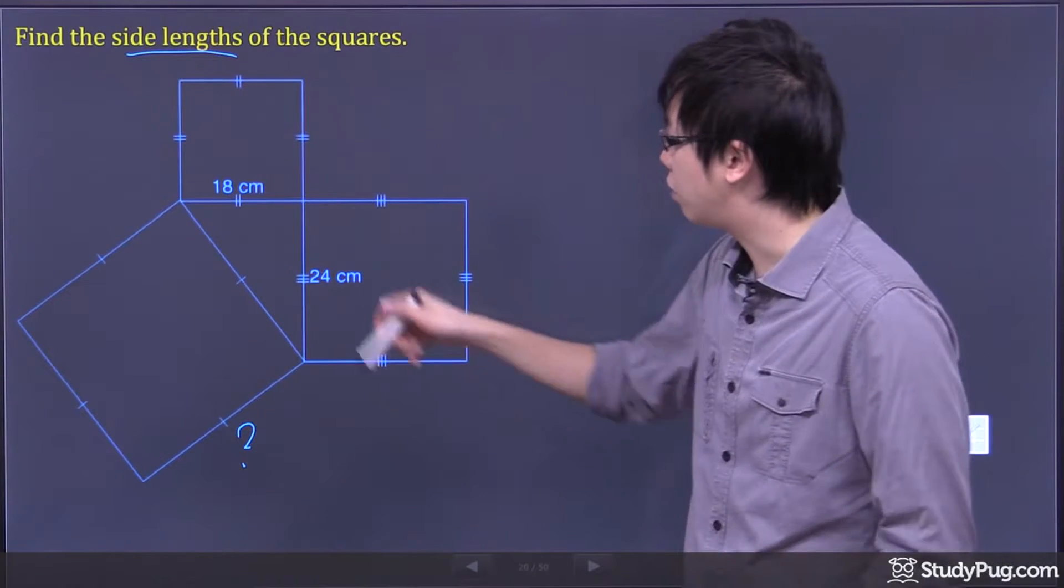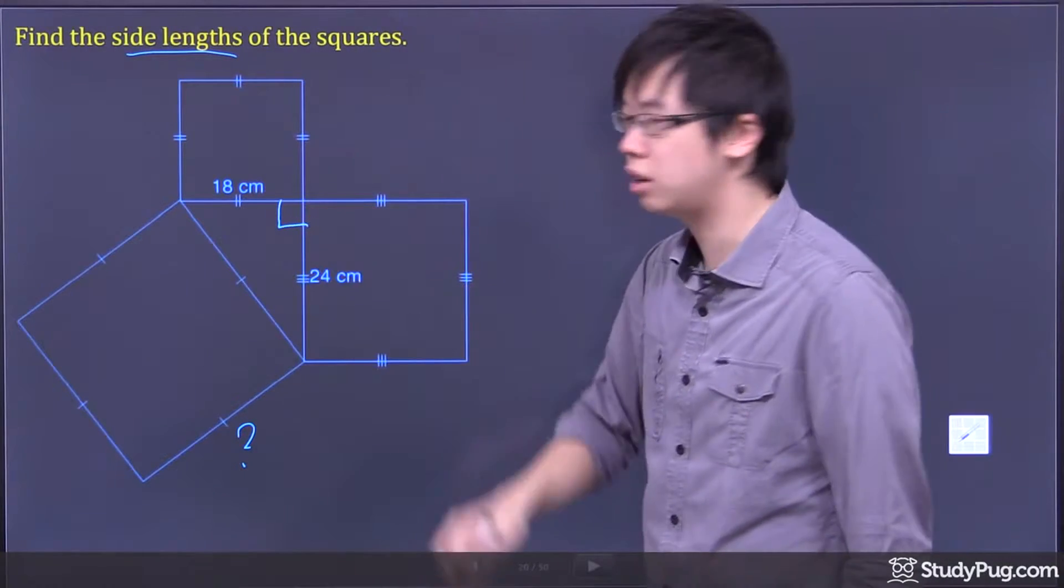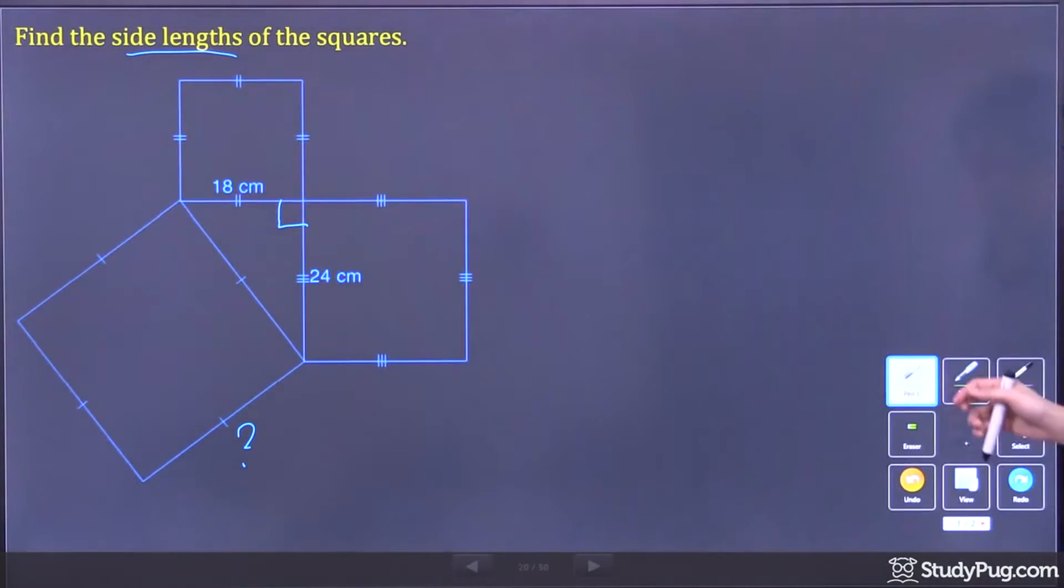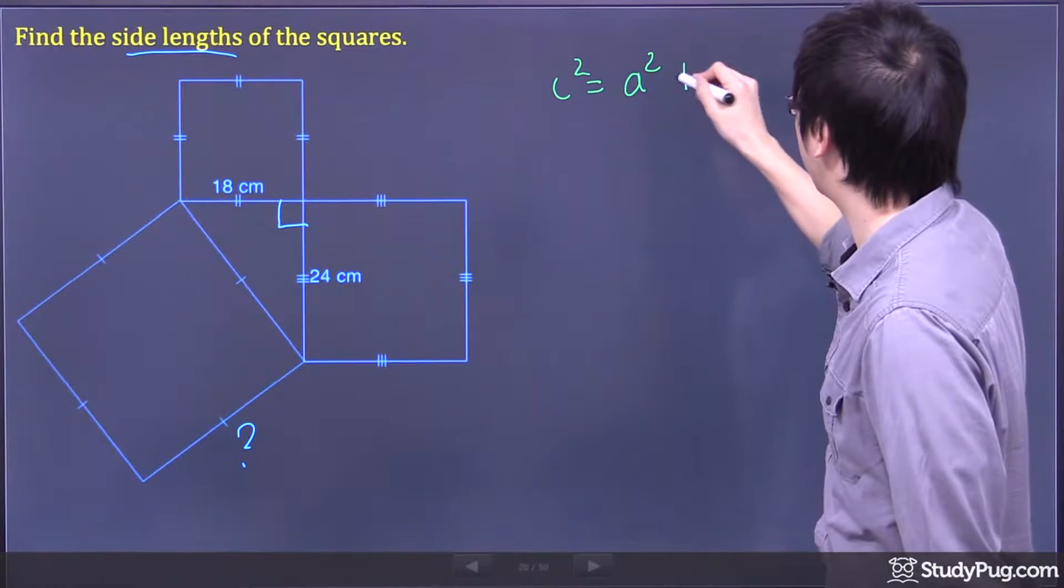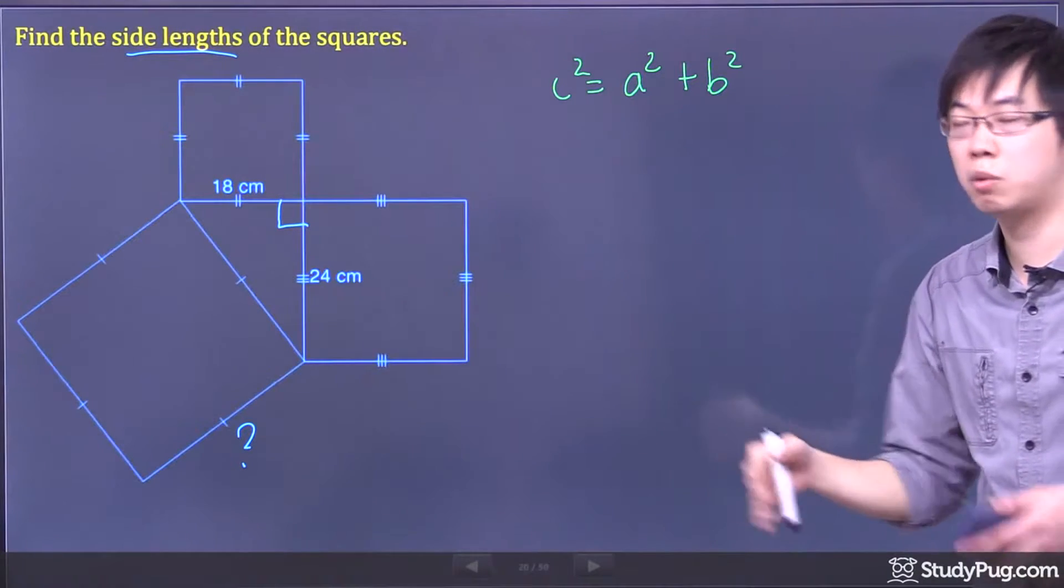So the only hint that we have is that this is 90 degrees. If you have 90 degrees, that means you can go ahead and use the Pythagorean theorem, which is c² = a² + b². And that's the formula you want to memorize.